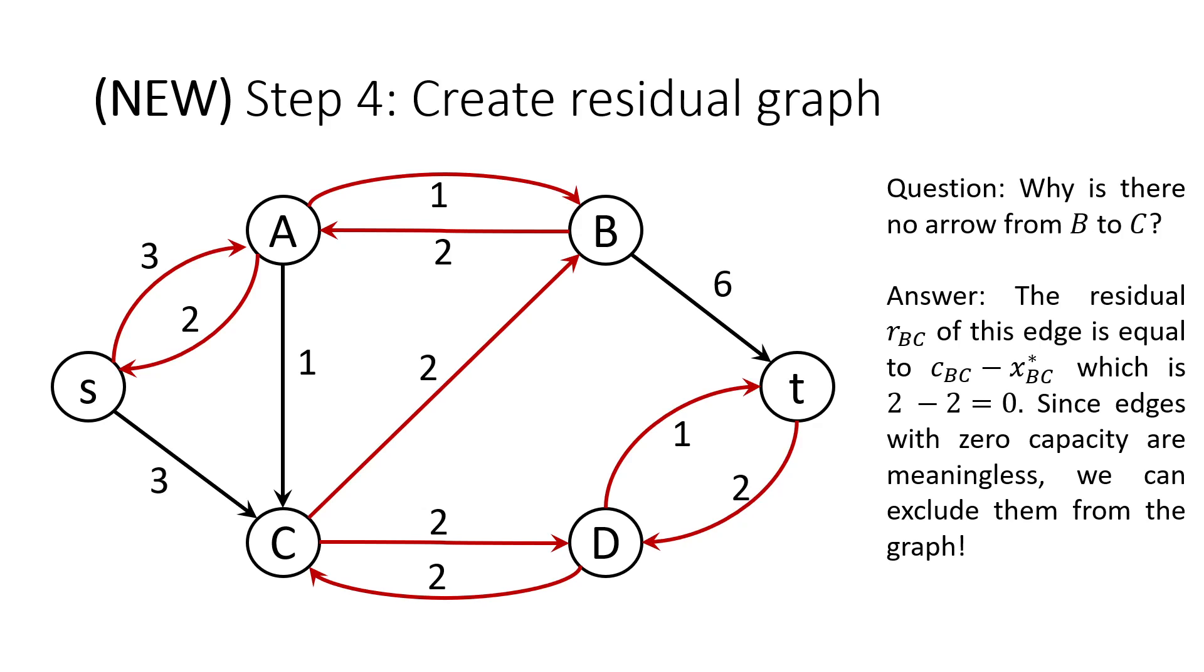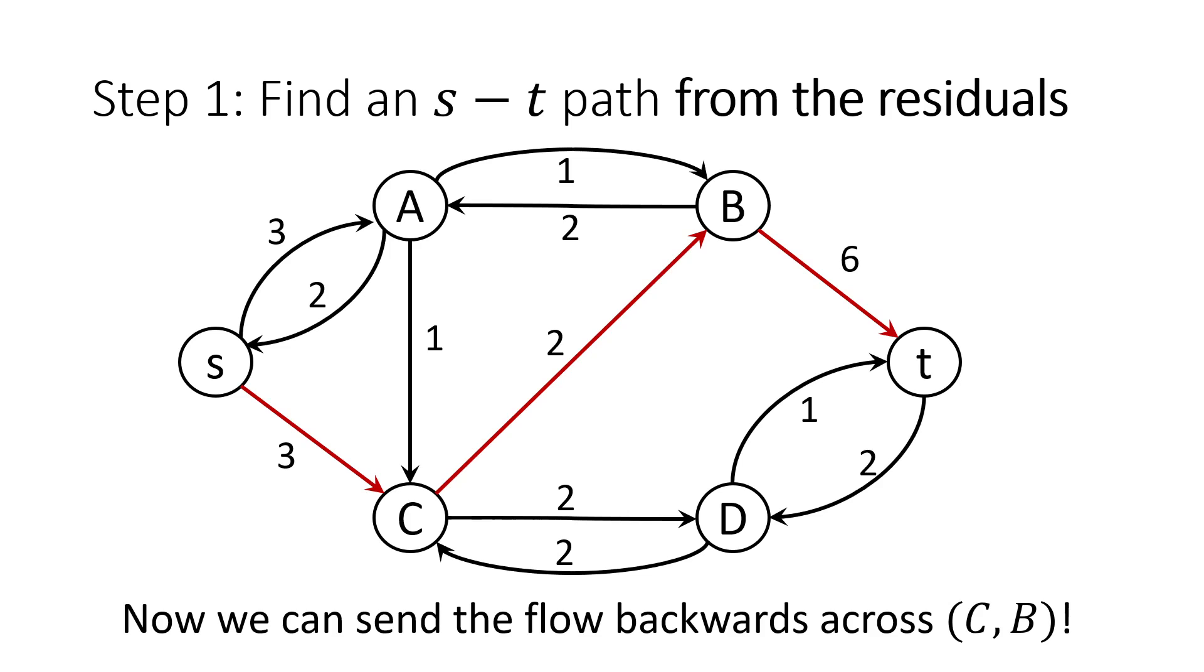Now, note that there isn't an edge from B to C. The reason for that is that we've sent the maximum flow through the B to C edge already, meaning that there is no extra capacity that remains. In other words, the residual is zero. Since an edge with zero capacity is of no use to us, we can simply choose not to draw it.